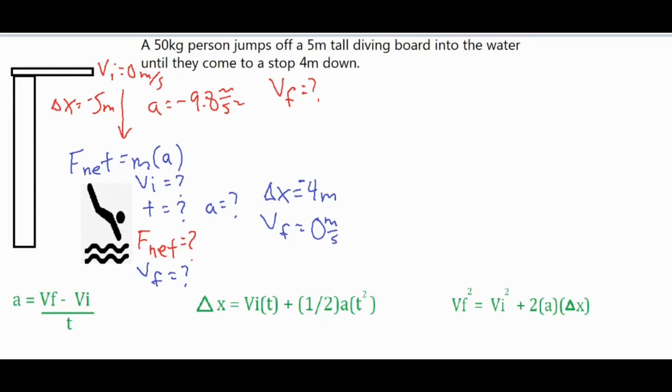So if we take a look at our three green kinematic formulas on the bottom, and we're looking for VF, we're going to have to use this third one over here. VF squared equals VI squared plus two A delta X.